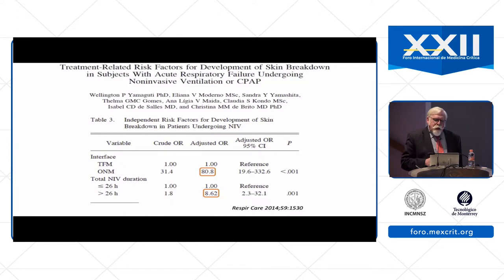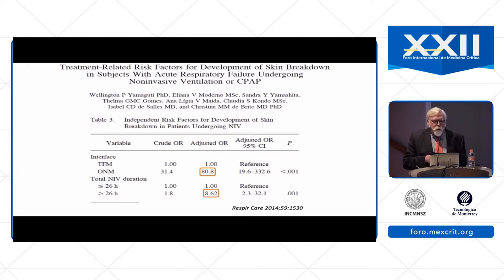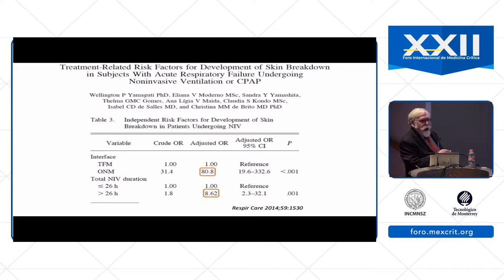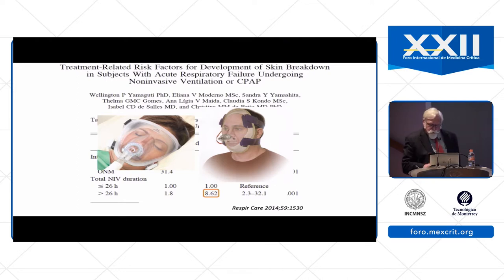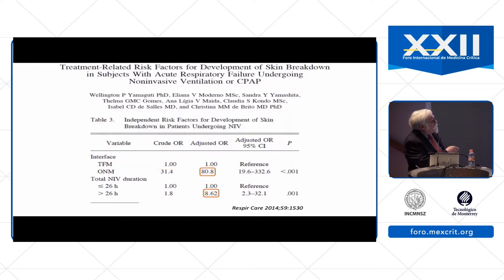Something appreciated in recent years is that some types of interfaces contribute to greater degrees of skin breakdown than others. This paper looked at total face masks versus oronasal masks and reported that the odds of developing skin breakdown were more than 80 times greater if an oronasal mask was used rather than a total face mask. These are pictures of total face masks that are commercially available, and the evidence suggests that with these devices, facial skin breakdown might be significantly lower than with a traditional oronasal mask.